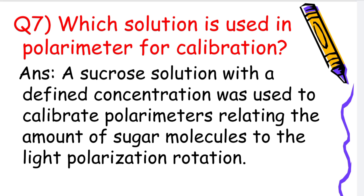Which solution is used in a polarimeter for calibration? A sucrose solution with a defined concentration is used to calibrate polarimeters, relating the amount of sugar molecules to the light polarization rotation.